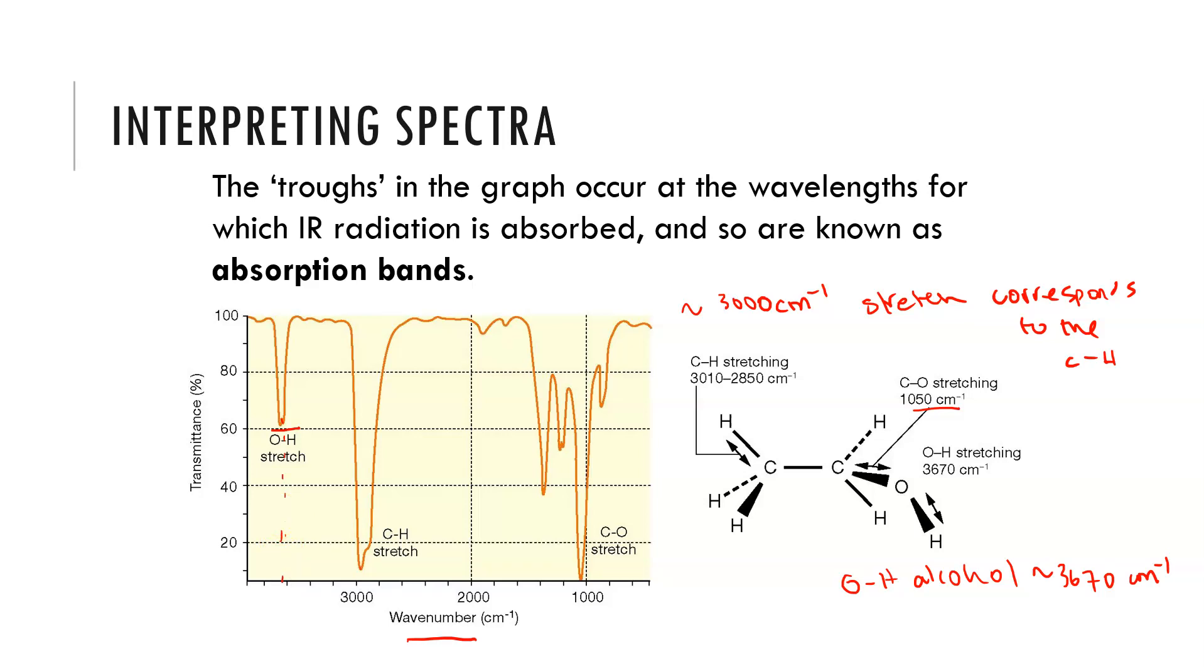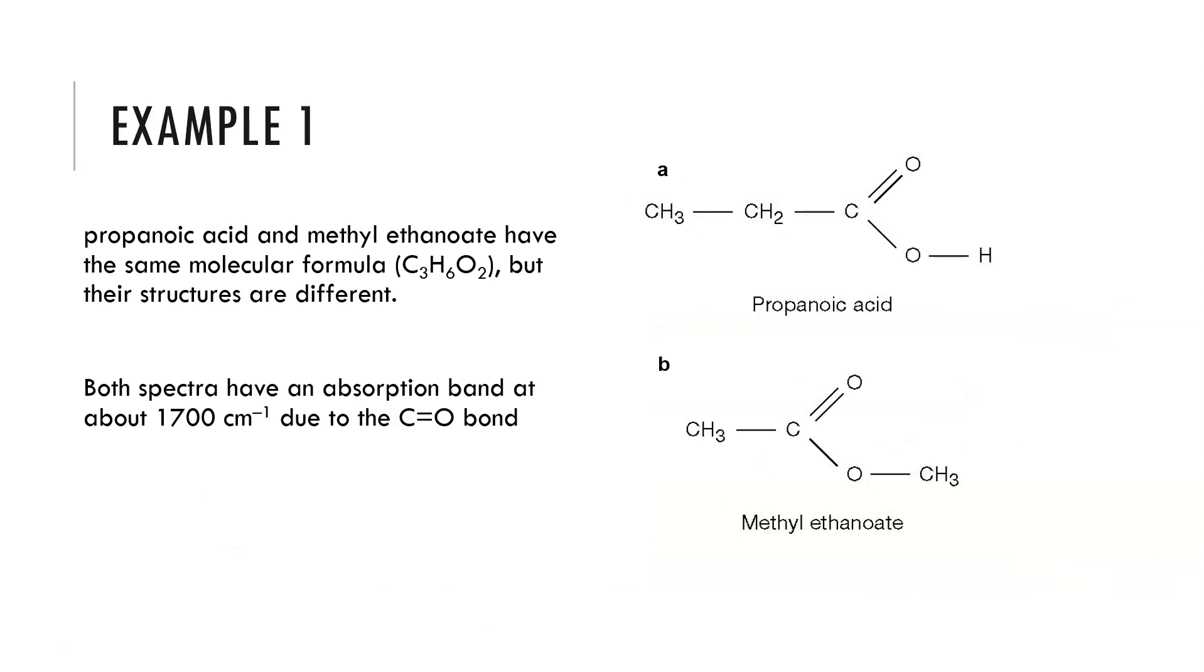These are reported as ranges within your data booklet so this isn't an exact science. They do move a little bit and we give the approximate wave number that we measure this absorbance at. If we look at propanoic acid and methyl ethanoate, they have the same molecular formula C₃H₆O₂. These are functional group isomers of each other but the structures are different. We would expect to see a peak at around 1700 cm⁻¹ for the carbonyl in each of them.